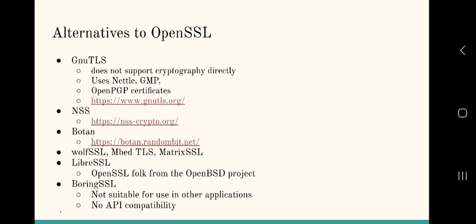There is also BoringSSL — another fork from OpenSSL by Google. Like LibreSSL, they removed some older encryption algorithms, but not as many. Their focus is mainly to use this library within Google for their own applications, and they do not aim to maintain API-level compatibility with OpenSSL. So it's not suitable for general applications, and Google also does not recommend it for general use unless you are working for Google.